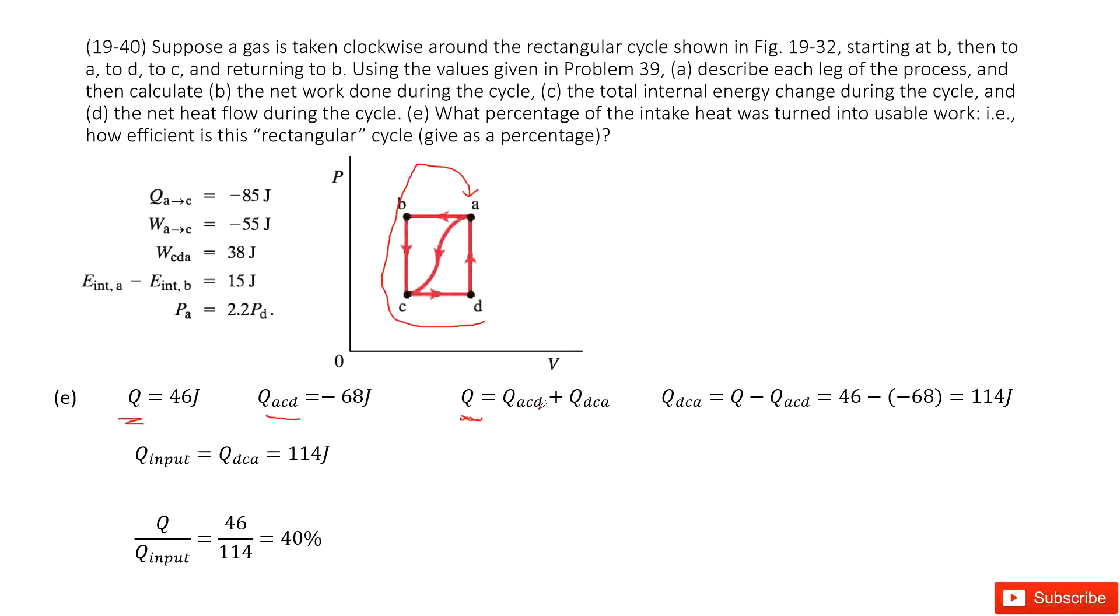From this, we can get DCA as Q minus ACD. ACD is given. So in this part, we can get the input Q. And this is the net Q over input Q. We get it around 40%. Thank you.